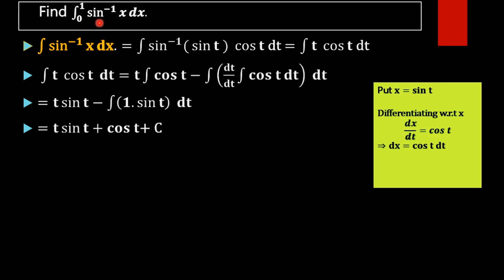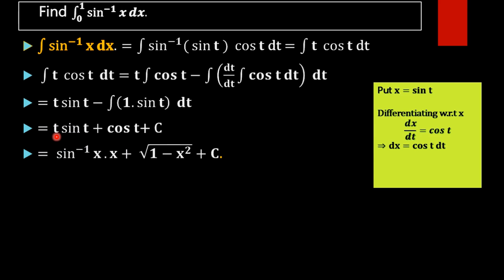Now we apply the limits of integration, but first we change the function from terms of t back to terms of x. Since x equal to sin t, we have t equal to sin inverse x, and sin t equals x. For cos t, we use cos t equals square root of 1 minus sin squared t, and since sin t is x, cos t equals square root of 1 minus x squared.